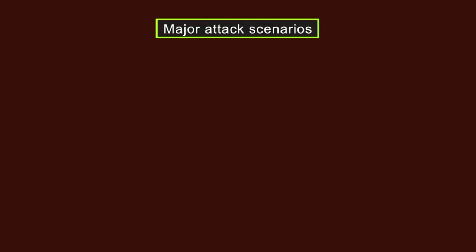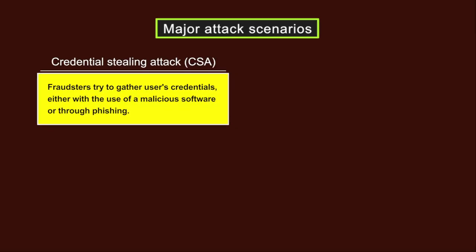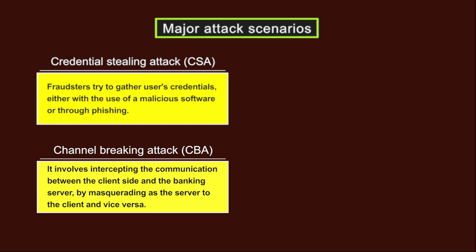The following are the major attack scenarios. Number one is a credential stealing attack, where fraudsters try to gather users' credentials either with the use of malicious software or through phishing. Number two is a channel breaking attack. It involves intercepting the communication between the client side and the banking server by masquerading as the server to the client and vice versa.